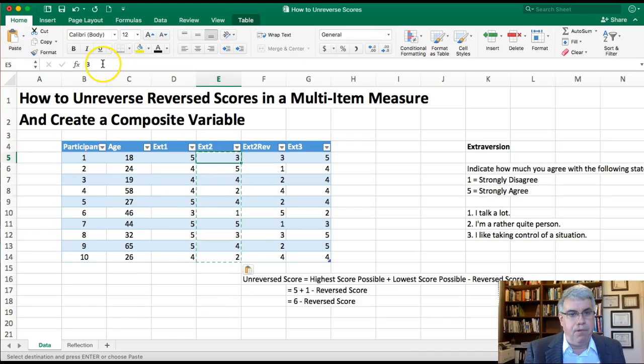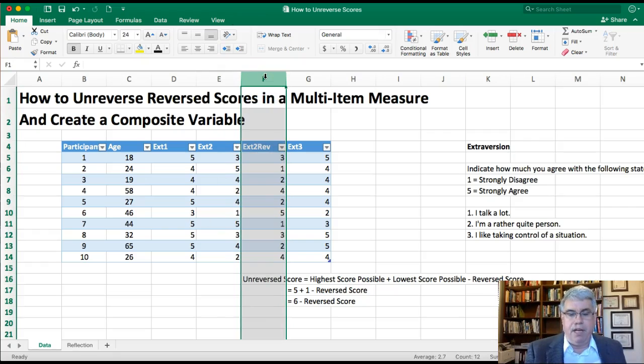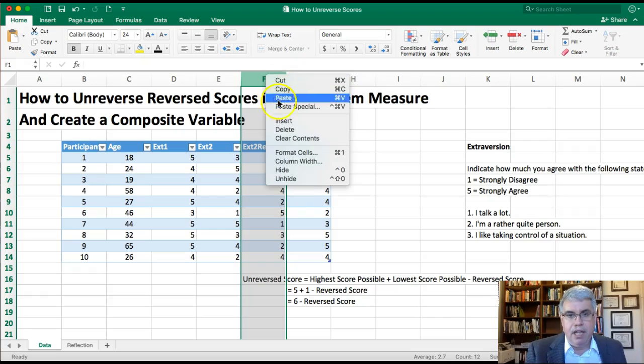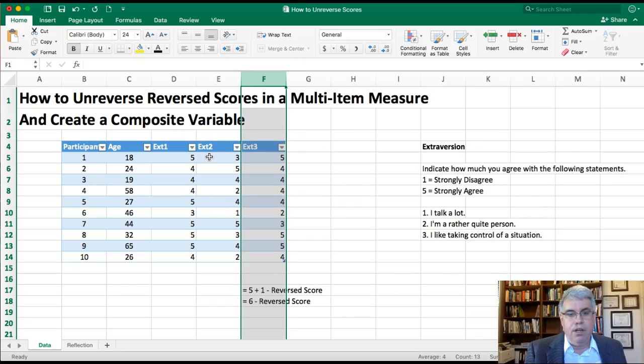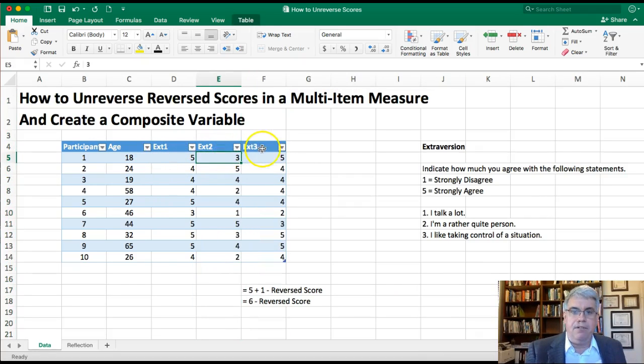Now when I go up to the formula bar, we have just numbers there. You might have these little dotted lines moving, that just shows that it's selected. I'm going to press Escape to stop it. Now I can go to column F, I can select it by clicking on it, and then with the two-fingered click I can delete it. And now I've got the unreversed scores for all three items: Extroversion 1, Extroversion 2, and Extroversion 3.